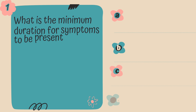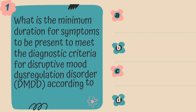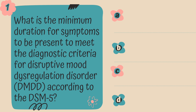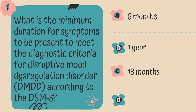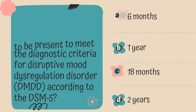Question 1. What is the minimum duration for symptoms to be present to meet the diagnostic criteria for DMDD according to the DSM-5? Is it A. 6 months, B. 1 year, C. 18 months, or D. 2 years?